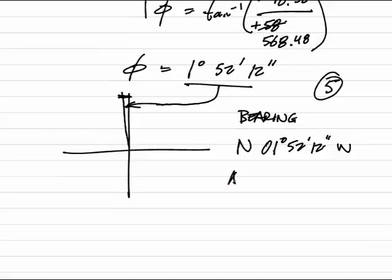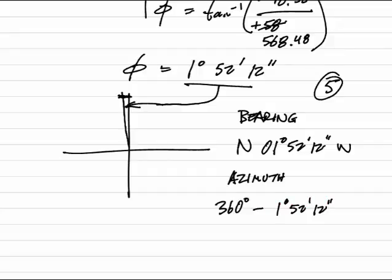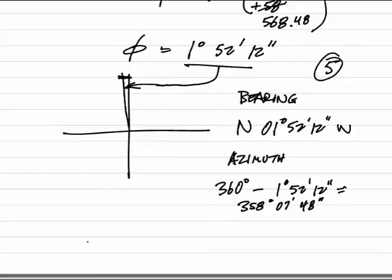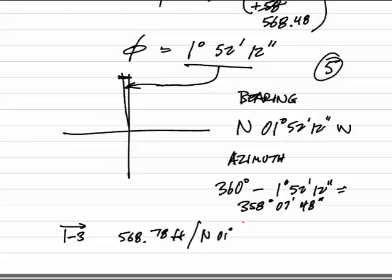If I want this in azimuth, azimuth in this case, because I'm in the northwest quadrant, is going to be 360 degrees minus my 1 degree 52 minutes and 12 seconds. That's going to be 358 degrees 07 minutes and 48 seconds. The final result for this line going from 1 to 3 gives me a distance of 568.78 feet with a direction of north 01 degrees 52 minutes 12 seconds west, or an azimuth of 358 degrees 07 minutes 48 seconds.